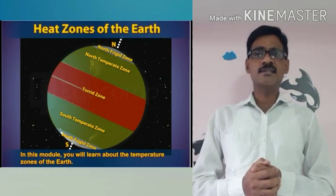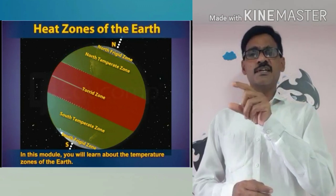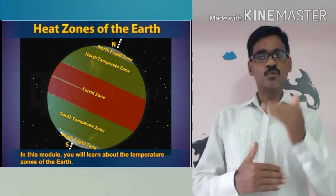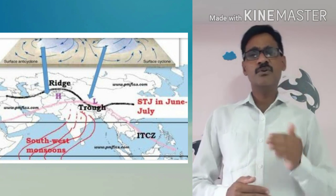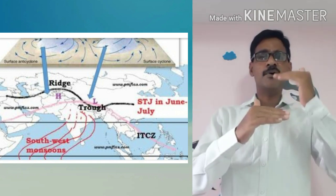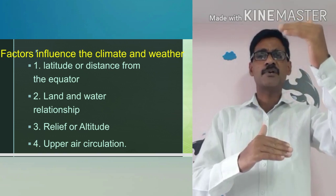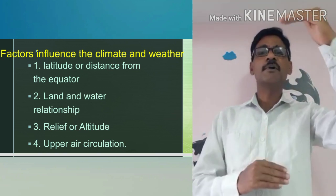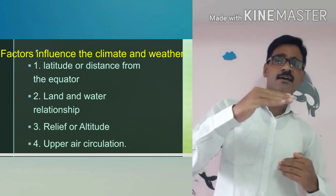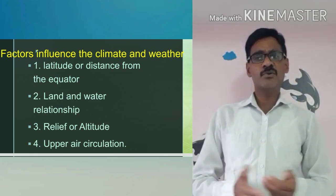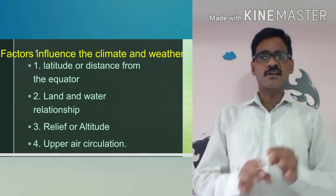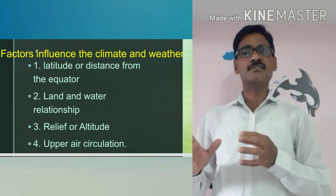The Tropic of Cancer passes through almost the center of India, dividing India into two parts — northern part and southern part. As we have learned, the upper part above the Tropic of Cancer lies in the temperate zone, and the lower part below the Tropic of Cancer lies in the tropical zone. This automatically causes variation in climatic conditions in India.